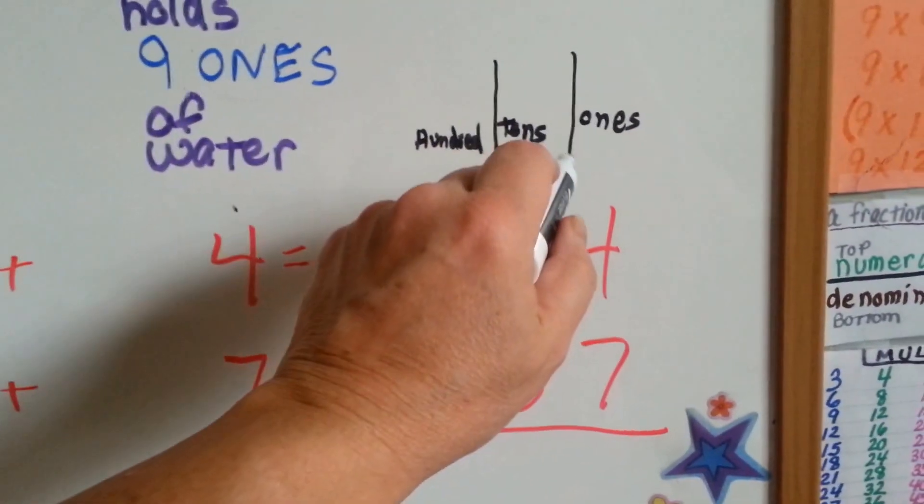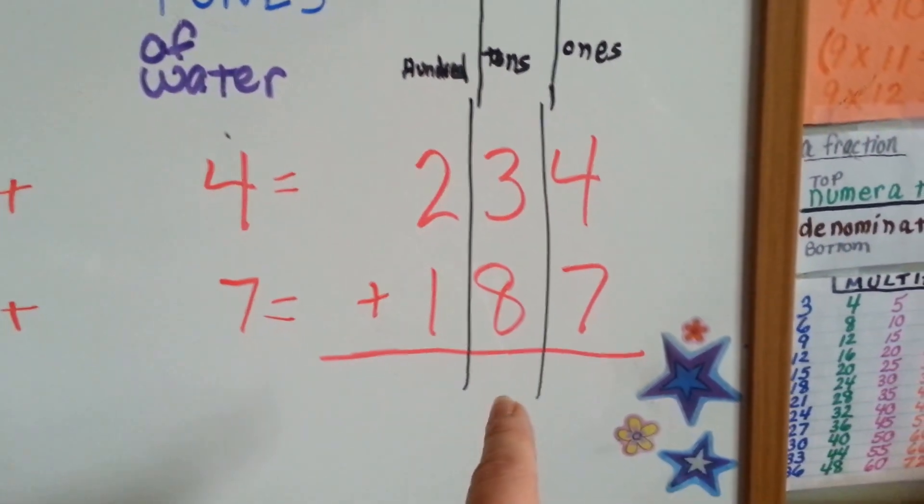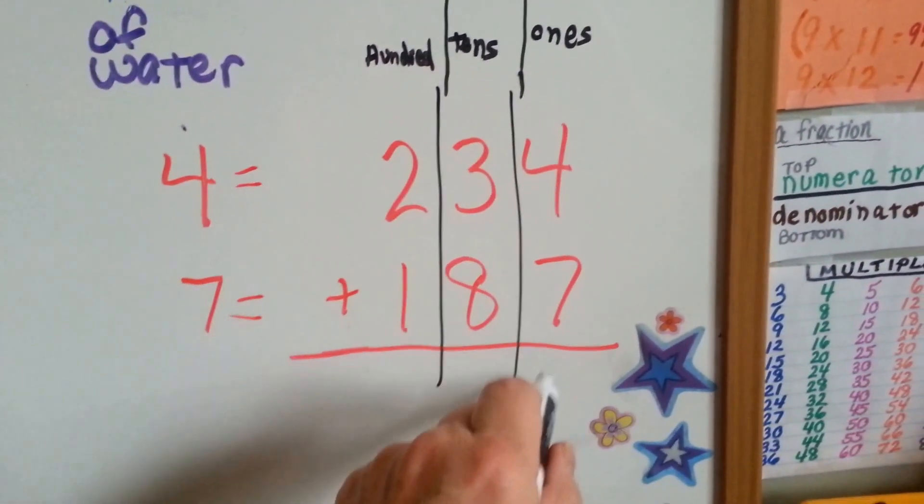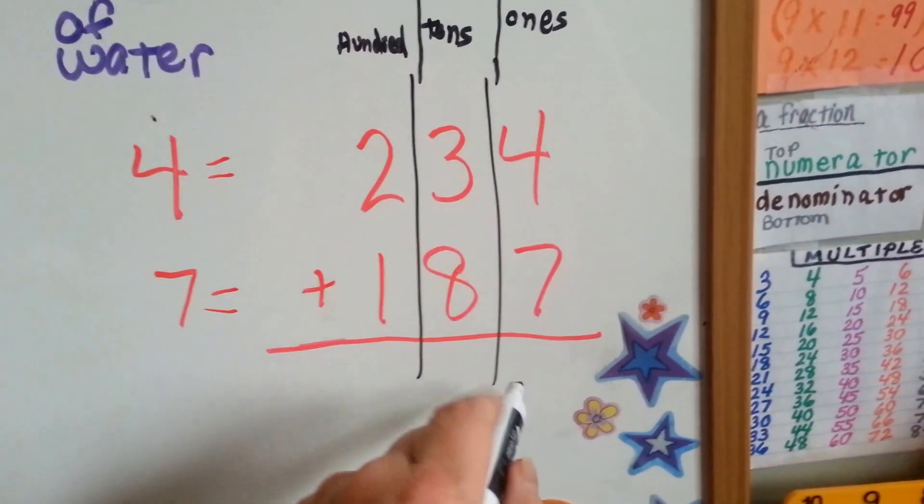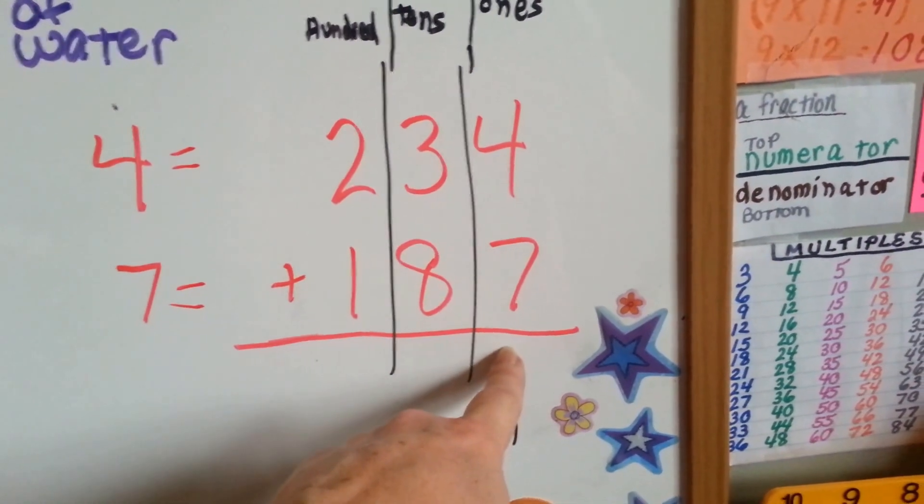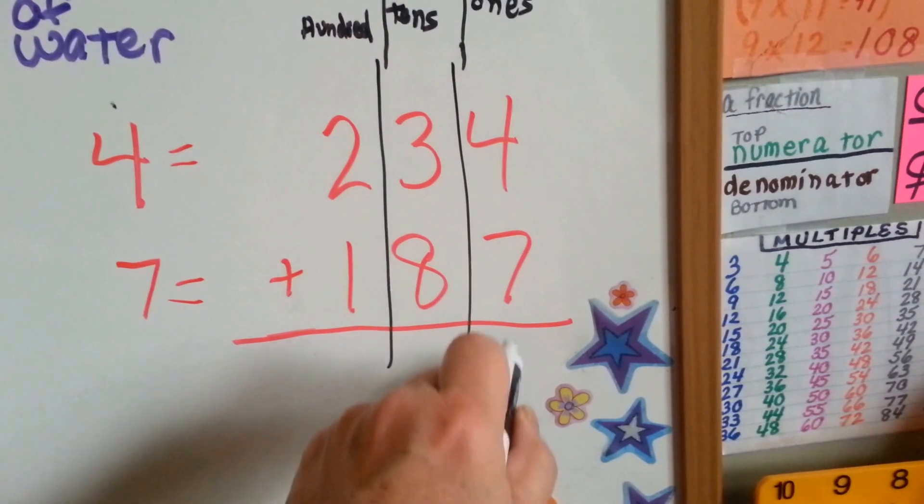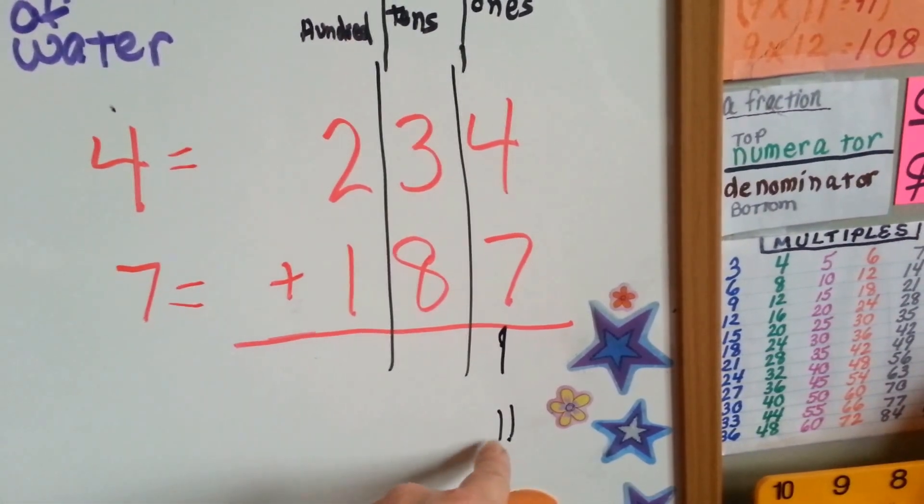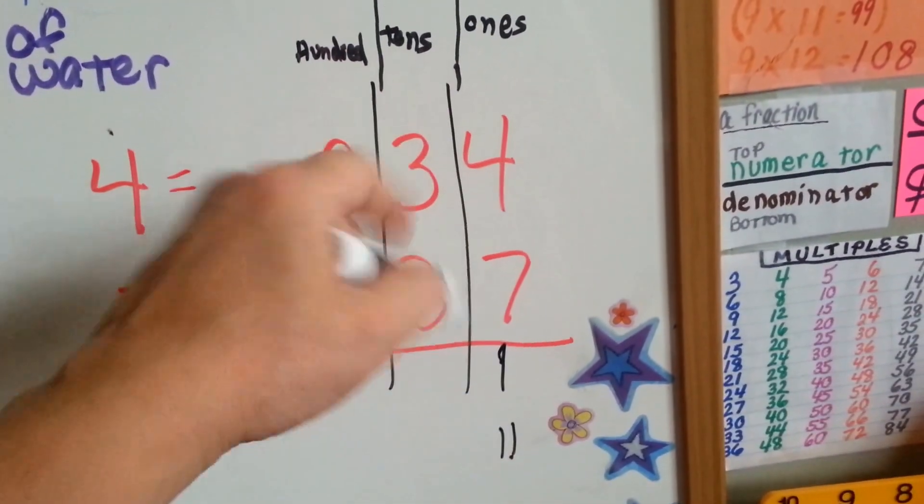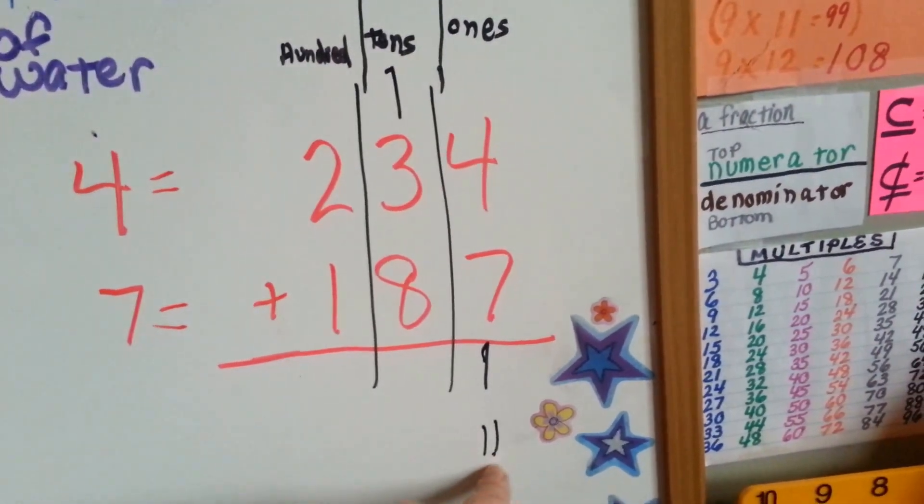When you're adding, you're only allowed to put one number in the column. You can't put two numbers here. 7 plus 4 is 11. You can't put the 11 there. It's only allowed to have one digit. So, the one that's in the ones place is going to go here, and this one that's in the tens place is going to go into the tens column. Because it's a 10. Because we know that's ones and that's tens.